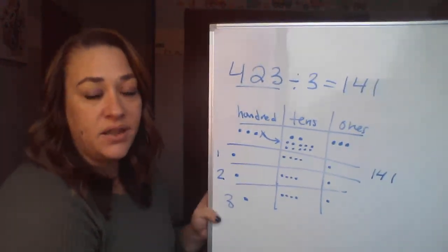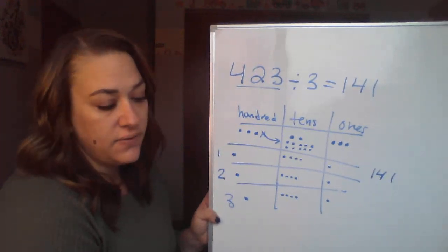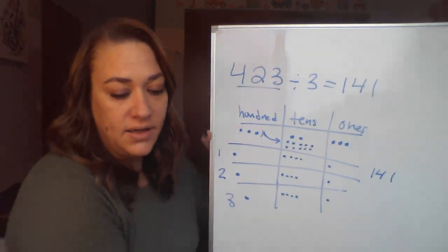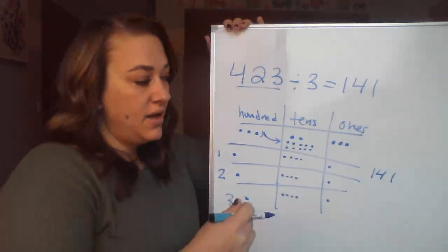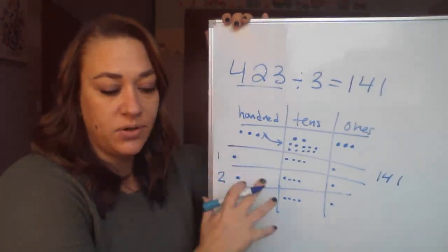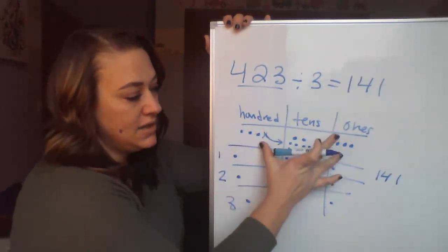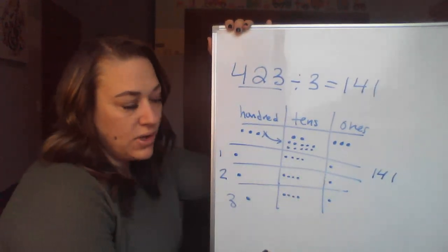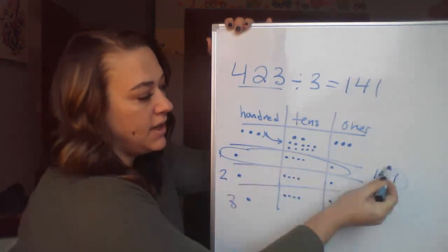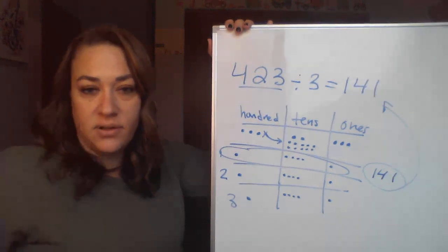This is another strategy that you can use for dividing. If you aren't really liking the area model, if you're not really liking the standard algorithm, this takes a lot more time, especially when we get to those larger numbers. But for these smaller numbers, it's nice for you to see this is what's happening. I'm taking this whole and I'm breaking it evenly into three groups. And whatever the value is of one group, that's my quotient.